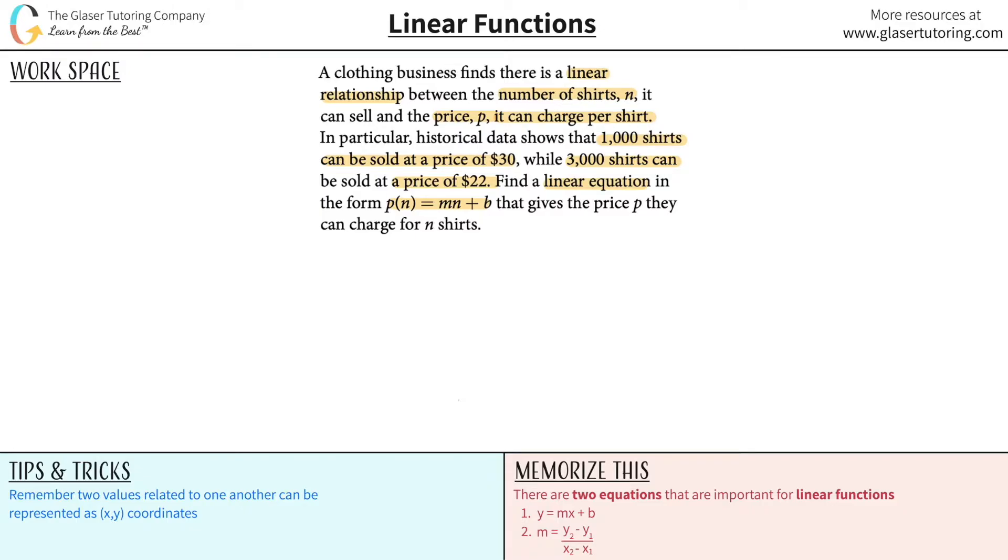If you know there's a linear relationship, that means it's a straight line, right? So why don't we just sketch a very quick graph. Price is dependent basically on the number of shirts, though you might say the number of shirts depends on price - it's a little reflexive. I'm going to assume that n, the number of shirts, would be the independent variable and the price per shirt would be the dependent variable.